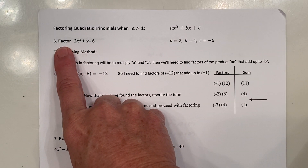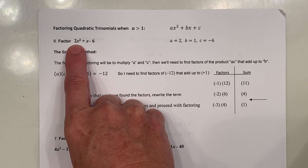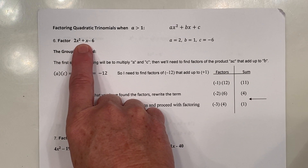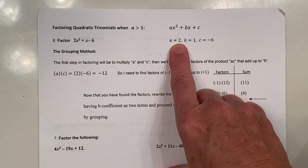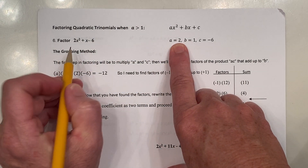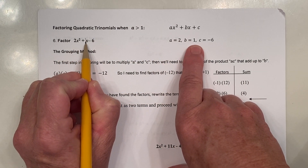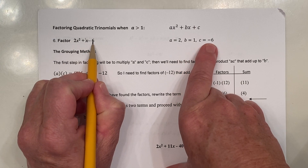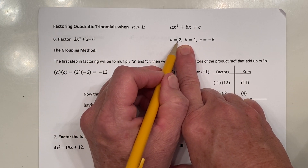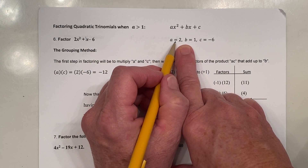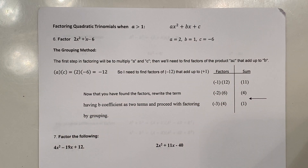Our example is to factor 2x squared plus x minus 6. We've recorded that a is 2, b is 1, and c is negative 6. Now that a is not equal to 1, it's not the easy case, but we're going to use some of the skills we learned in the easy case and involve factoring by grouping as well.